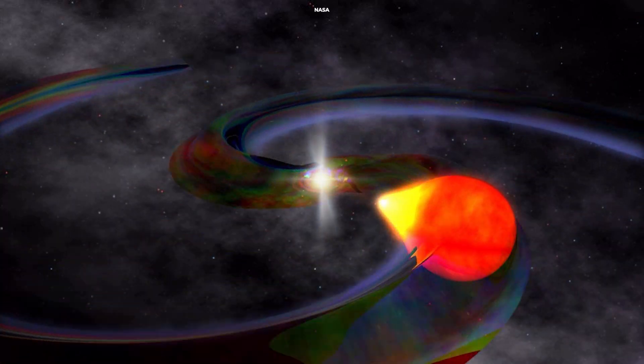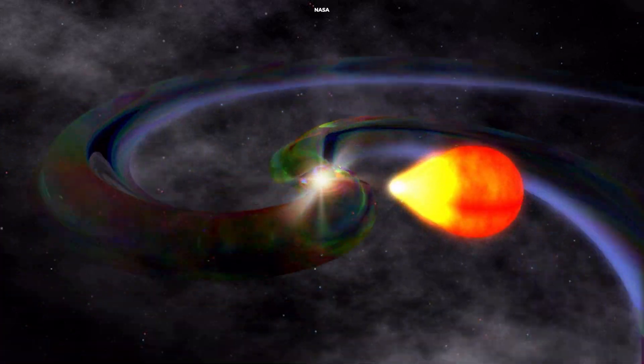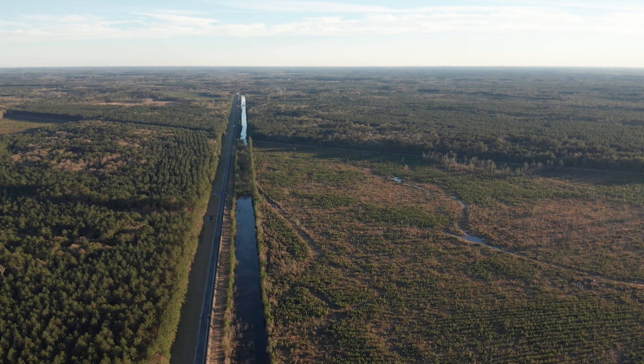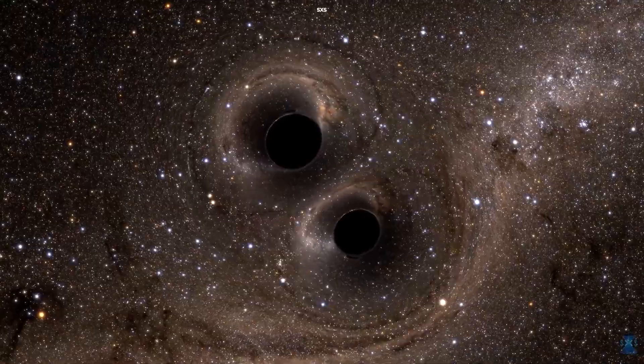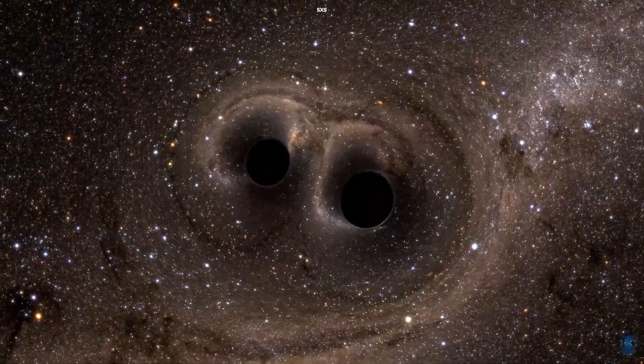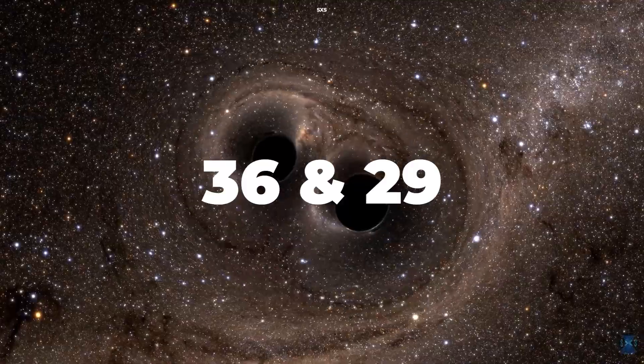Einstein was right. Changes in gravity do spread as waves through space. In 2015, the LIGO experiment detected such waves from a collision between two black holes with masses of about 36 and 29 times that of the Sun.